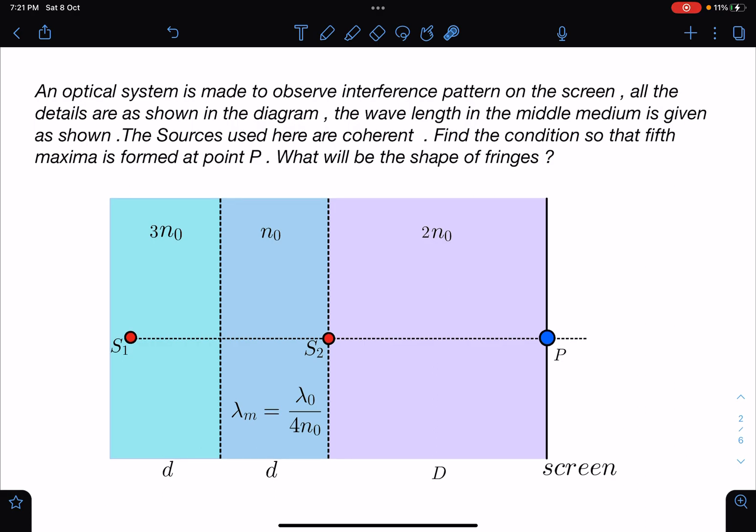So let's discuss this problem here. An optical system is made to observe interference pattern on the screen. All the details are given as shown in the diagram. The wavelength in the middle medium is given as shown, so it is given as lambda 0 by 4 n0 in the medium of n0. The sources used here are coherent. Find the condition so that the fifth maxima is formed at point P, and what will be the shape of fringes?